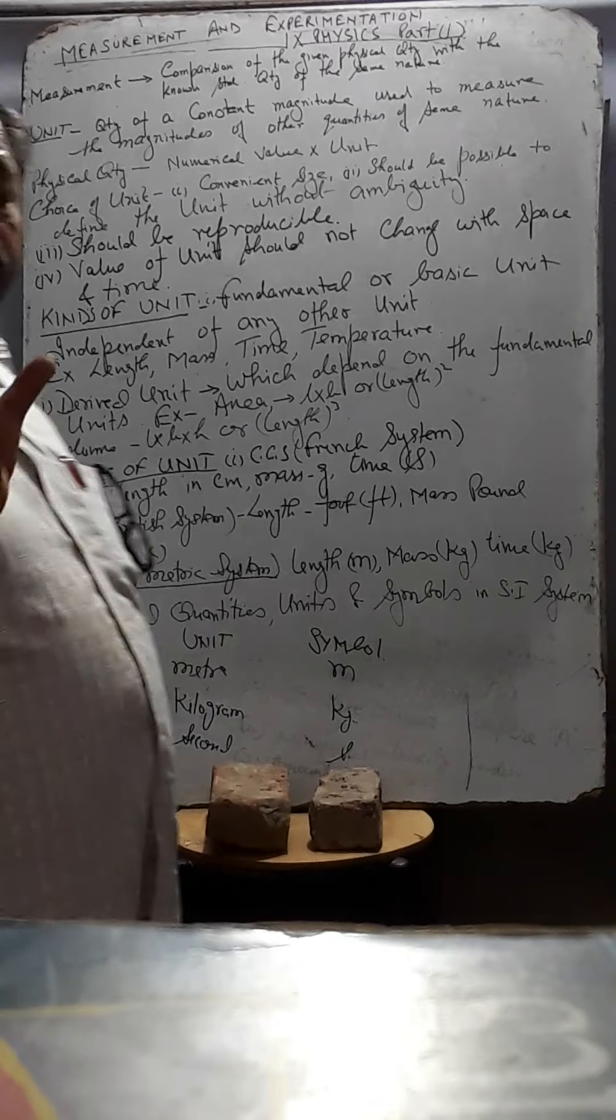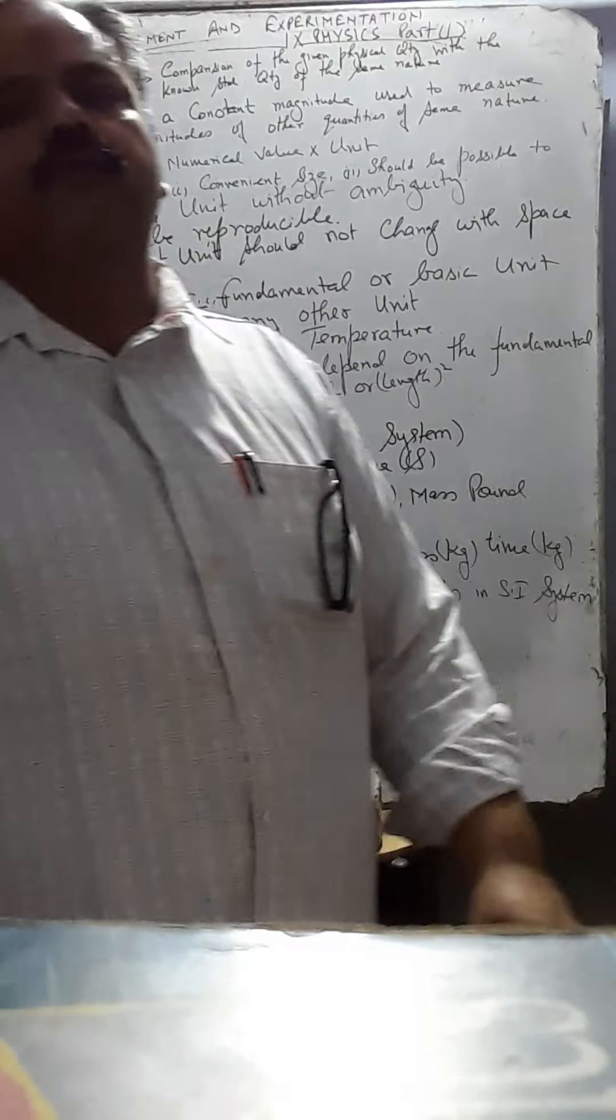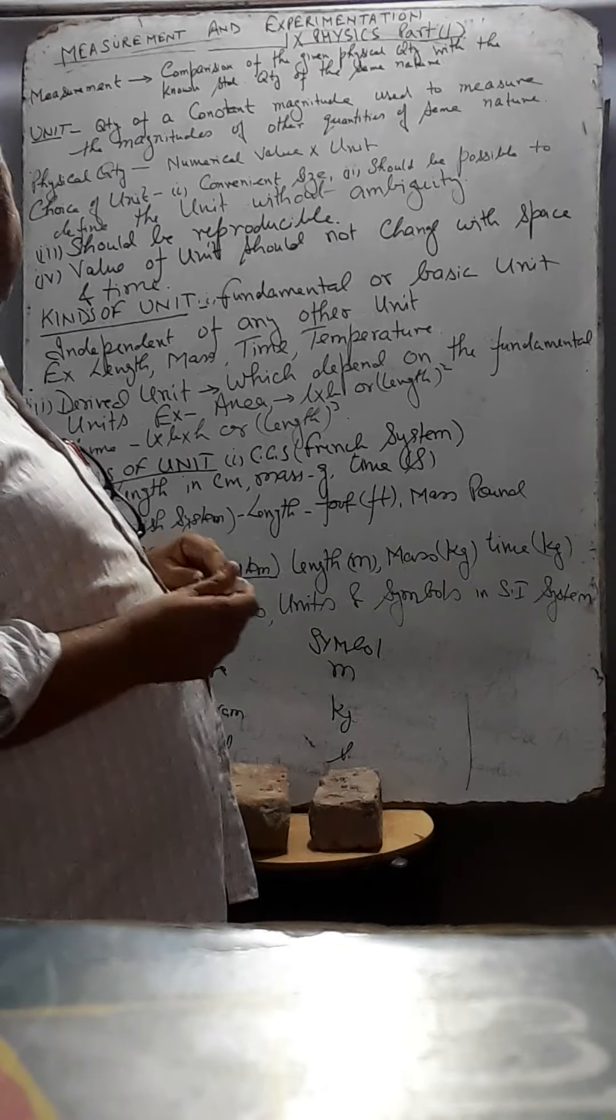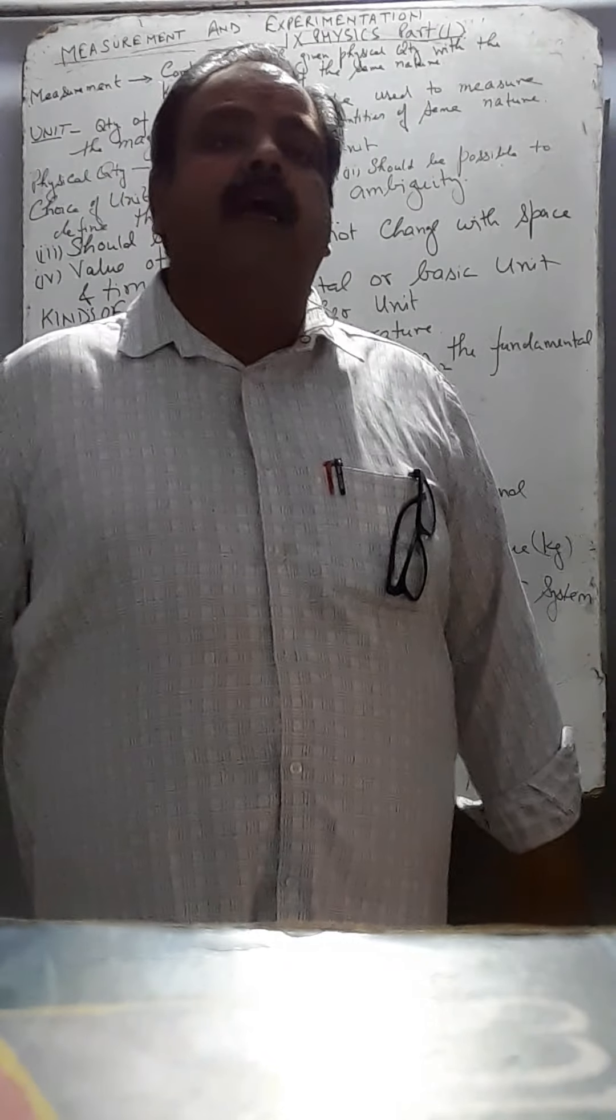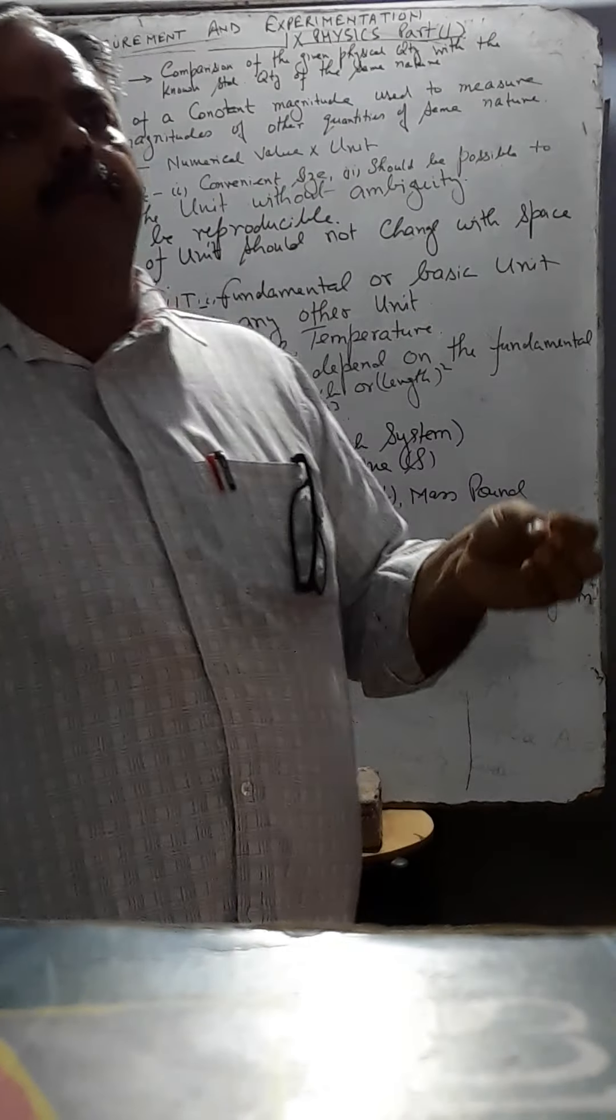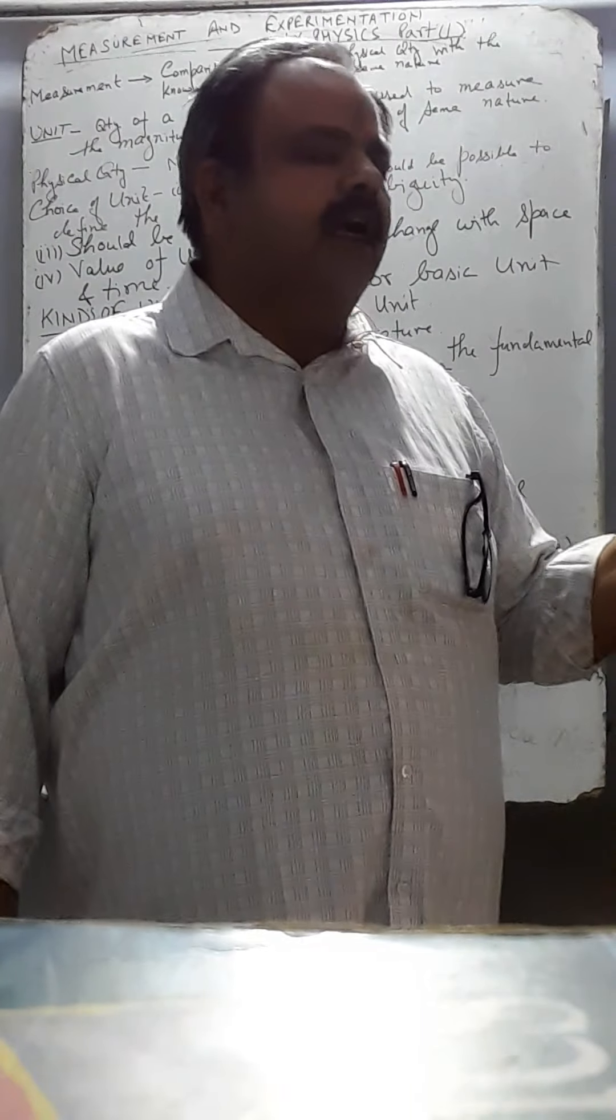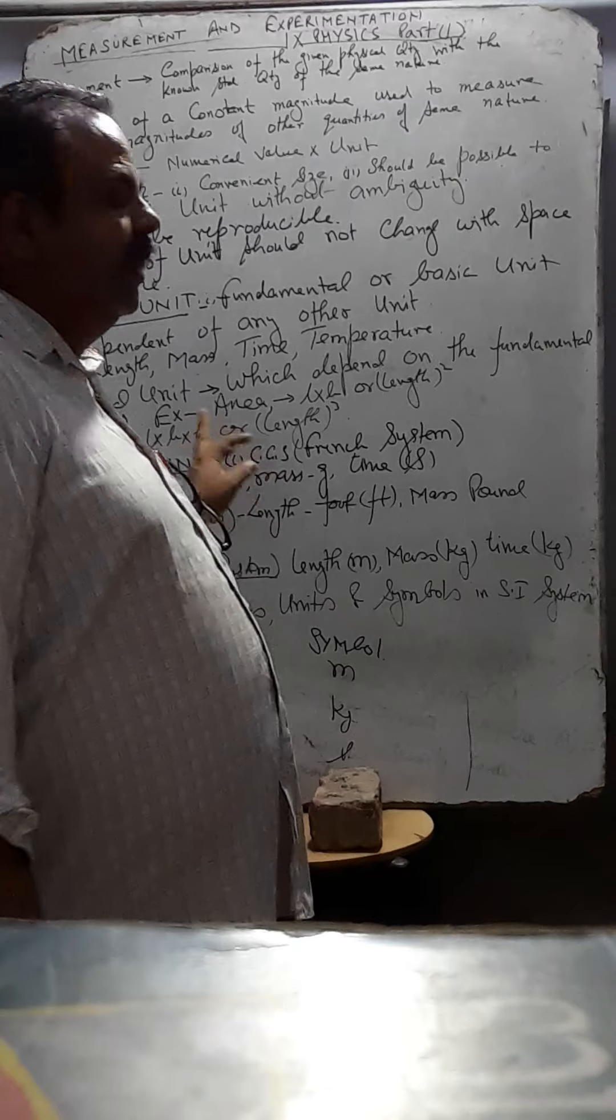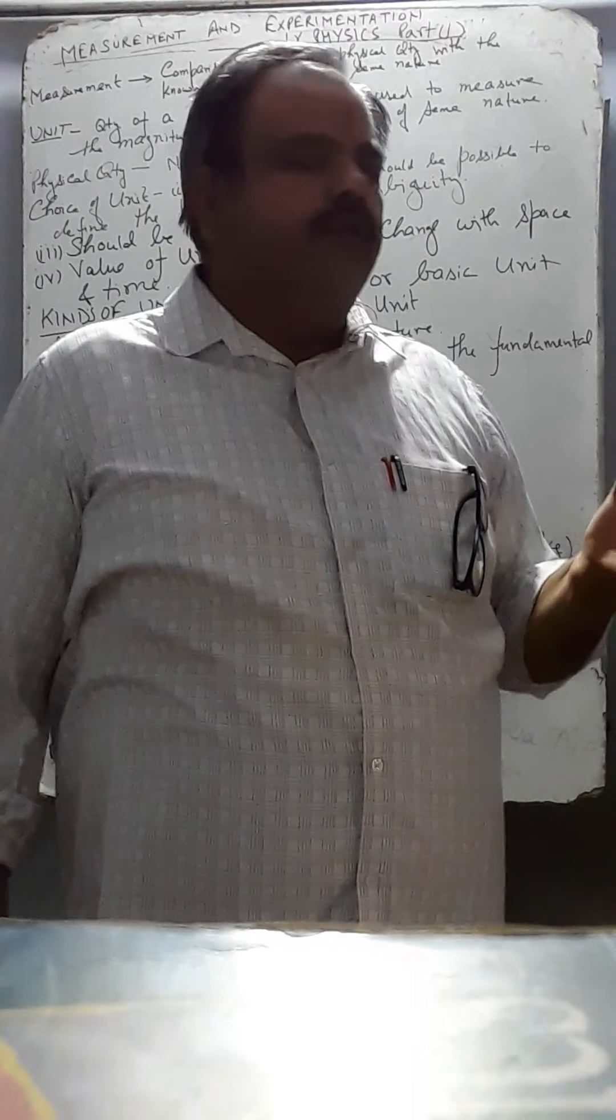Derived units. Derived units. Those units which are dependent on fundamental units. Those units which are dependent on fundamental units. For example, area. I have to calculate any of the room. I should know the length and breadth. Length and breadth can be length is square. This unit will be length is square or length into breadth. So, it is two dimensional. So, these are derived units taken from the fundamental units. Volume. Length into breadth into height. I have to calculate the volume of this room. So, length into breadth into height. So, these are derived units.